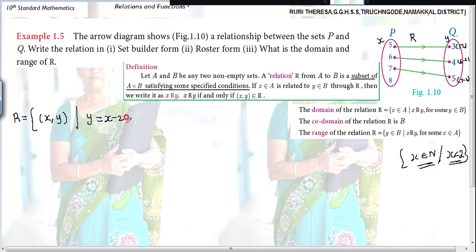X belongs to P, comma, Y belongs to Q. From where you are taking this element, that you have to specify. X comma Y such that Y equal to X minus 2, X is an element of P, Y is an element of Q. So first subdivision is over.